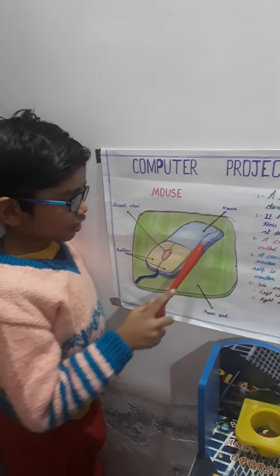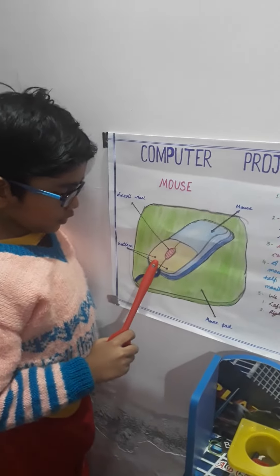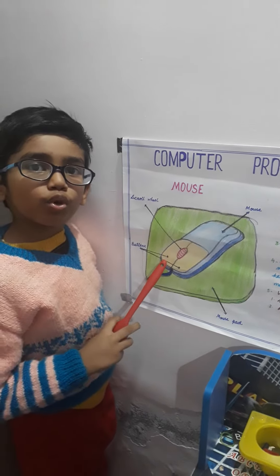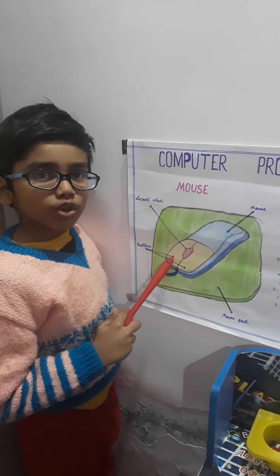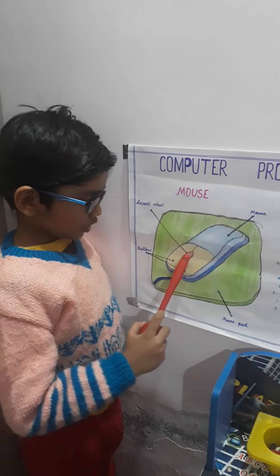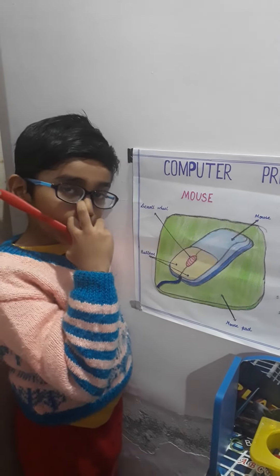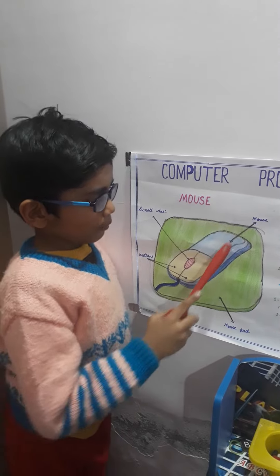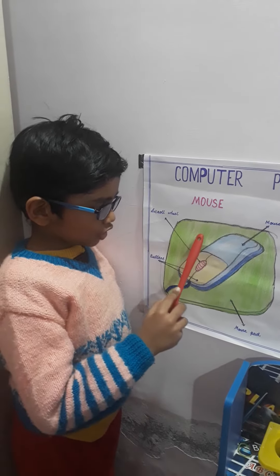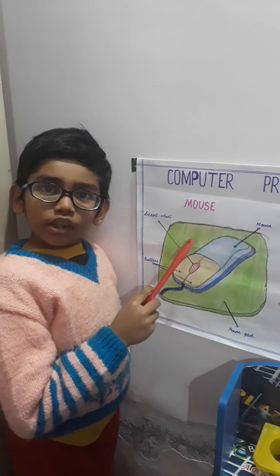Look, this is a mouse. Mouse has two buttons or three buttons also. This is a scroll wheel button. This is a mouse.